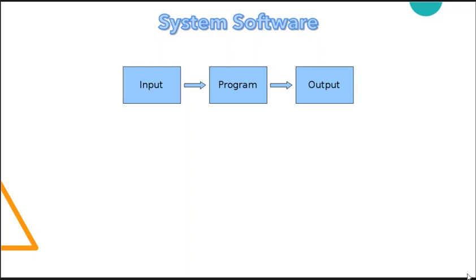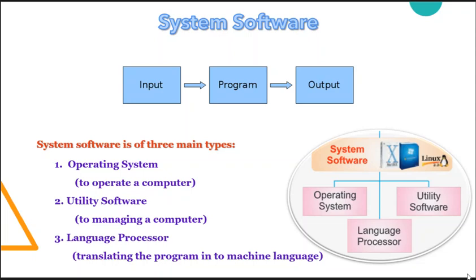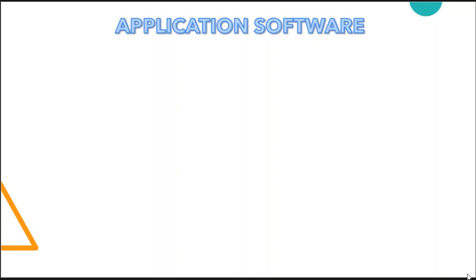System software makes the operation of a computer more fast, effective, and secure. There are three main types of system software: first is the operating system, used to operate a computer; second is utility software, used for managing a computer; and third is the language processor, used for translating programs into machine language.